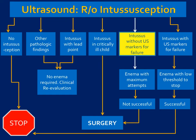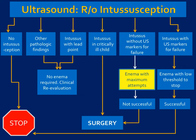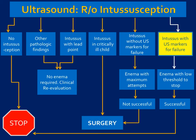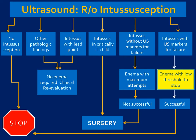If we don't see markers for failure — no interloop fluid, normal vascularity, symptoms for less than 24 hours — we will try our contrast enema with the maximum number of attempts, meaning three or more. If unsuccessful, the patient may go to surgery. If we do see markers for failure — symptoms greater than 24 hours, interloop fluid, or decreased vascularity — we'll still perform the enema to get the intussusception as close to anatomic position as possible, minimizing the length of the surgical incision.